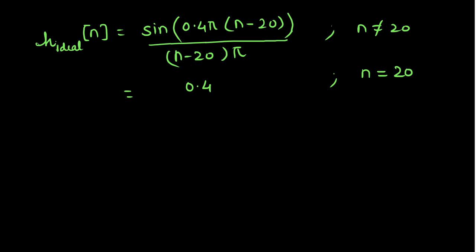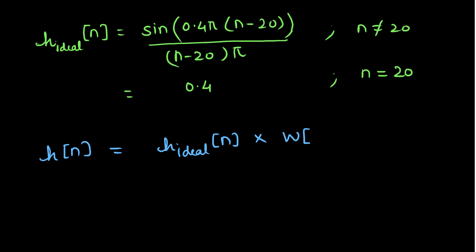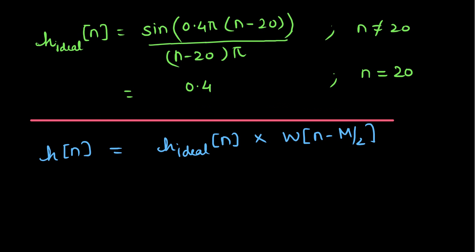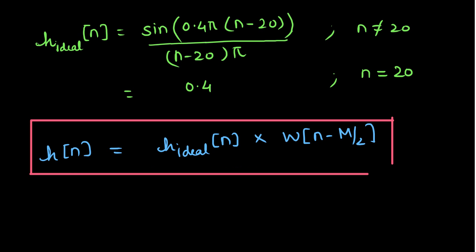The final FIR filter H(n) is given as H_ideal(n) multiplied by W(n minus M/2), where W(n minus M/2) is the Hanning window. This is the final expression for an FIR low pass filter of order M equal to 40 and cutoff frequency 0.4*pi.